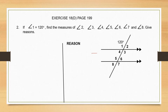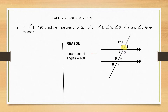Let's see how angle 2 is related to angle 1. As you can see, both these angles — angles 1 and 2 — are on the same straight line, and that means they are adjacent angles. The sum of adjacent angles on a straight line is equal to 180 degrees, which means they are a linear pair of angles. So we're going to start by finding angle 2, and the reason is: linear pair of angles.